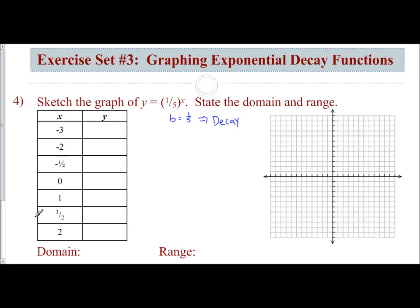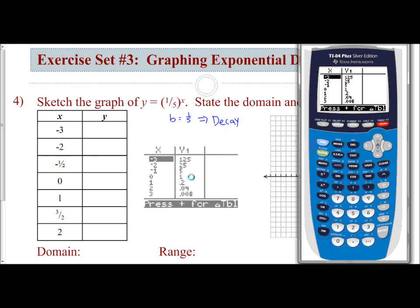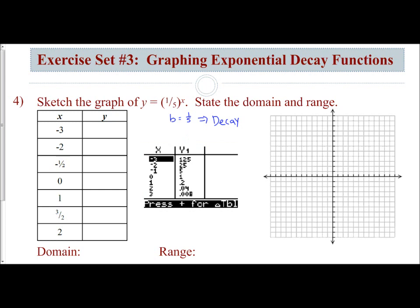Now I'm going to grab my graphing calculator, go to my y equals, and I'm going to put in my decay function. Since it's a fraction of 1 fifth, I'm going to do parentheses 1 divided by 5, and then raise that to the x power. Here is my function. I'm going to look at the table. Second graph for my table. I want to go from negative 3 to positive 2. If I look at my screen, negative 3 to 3, this contains everything. So I am just going to copy down that table.